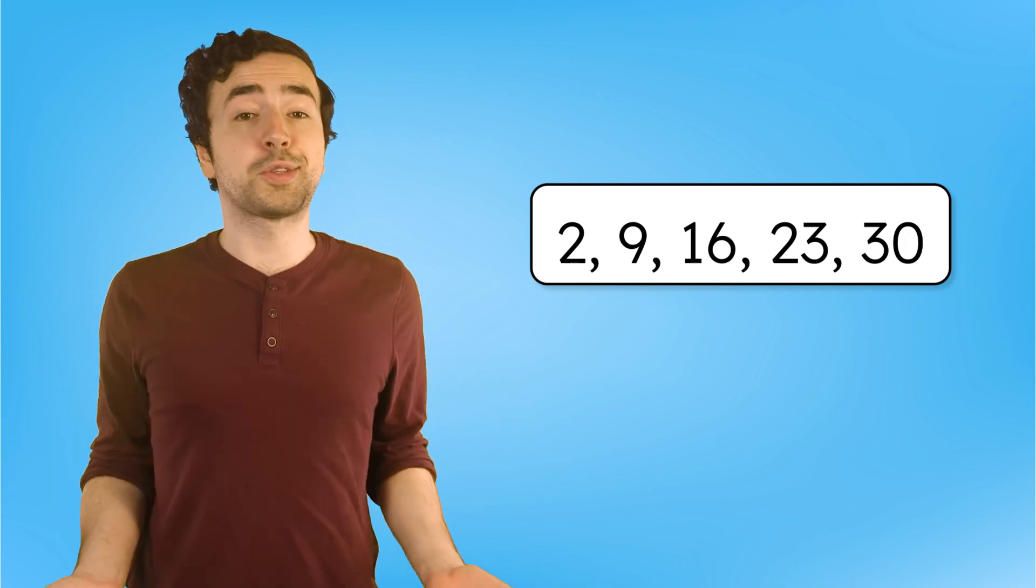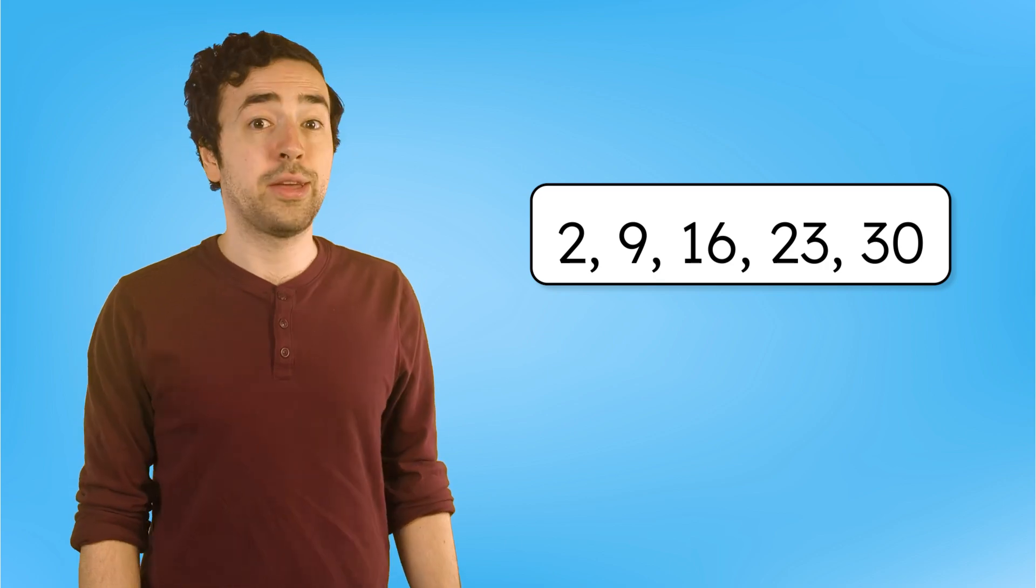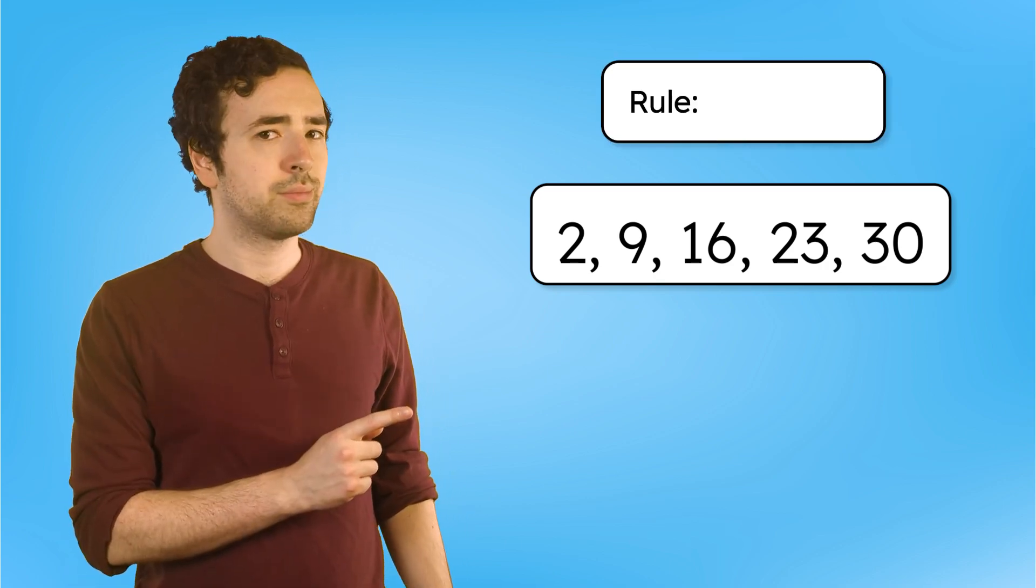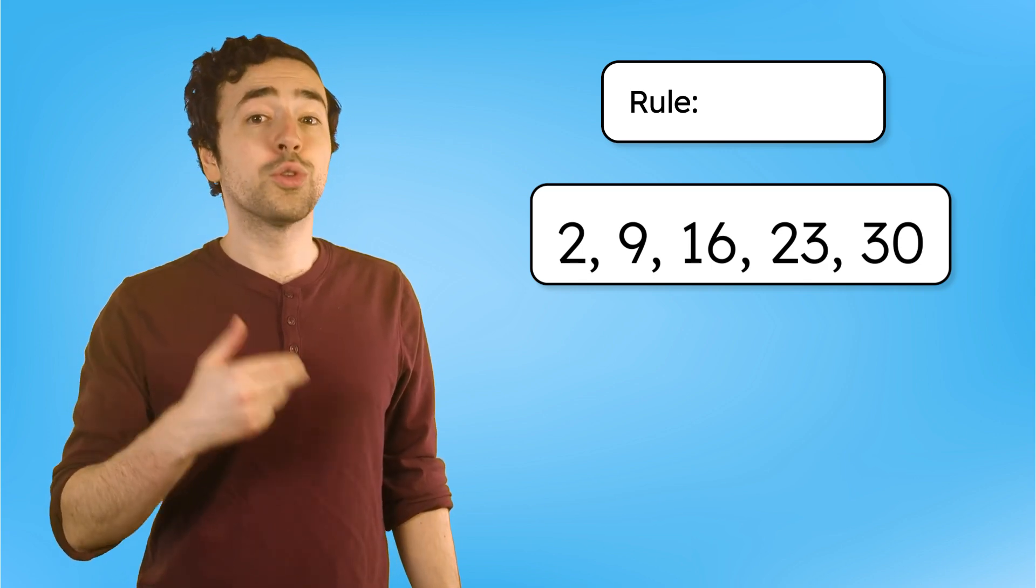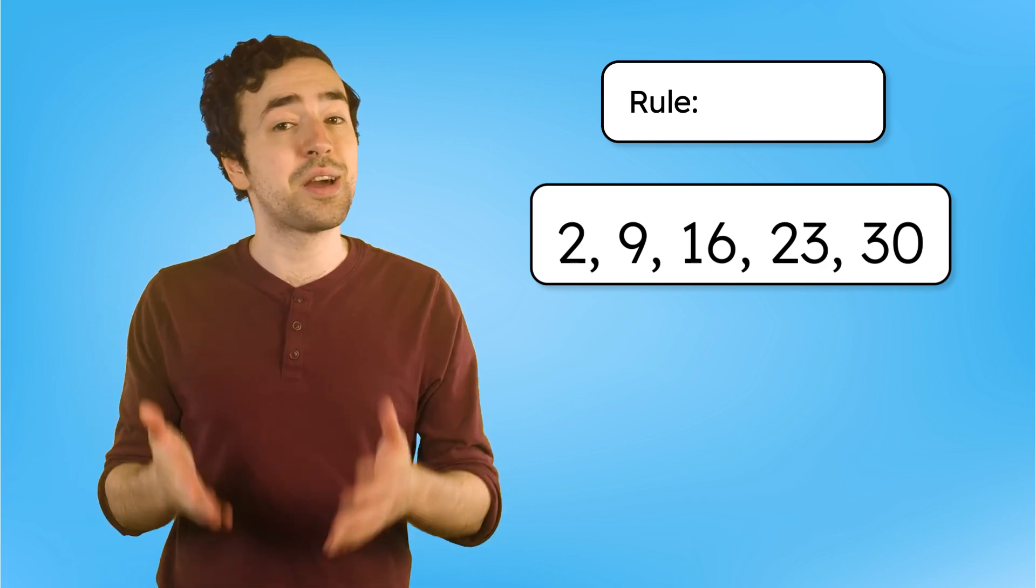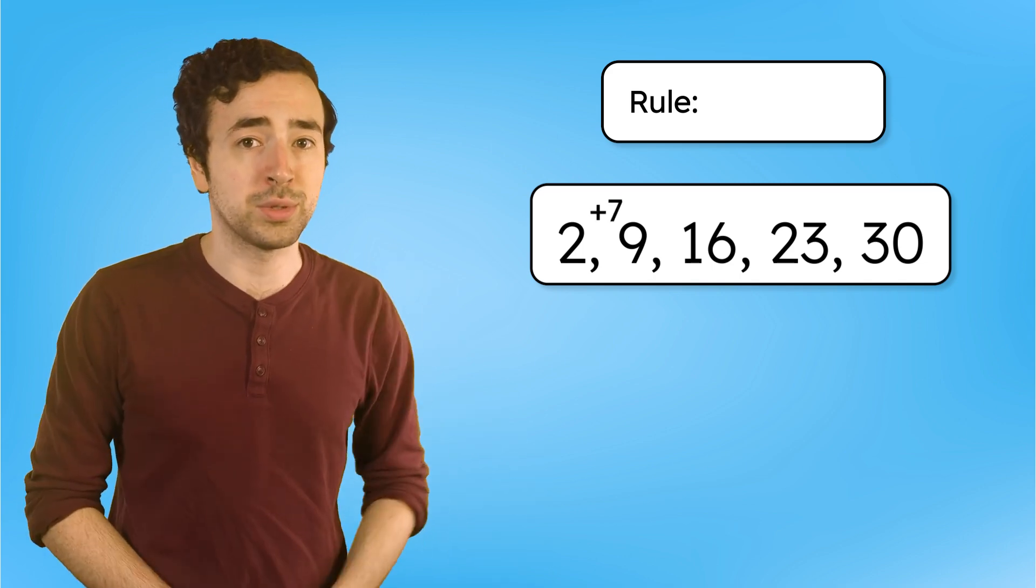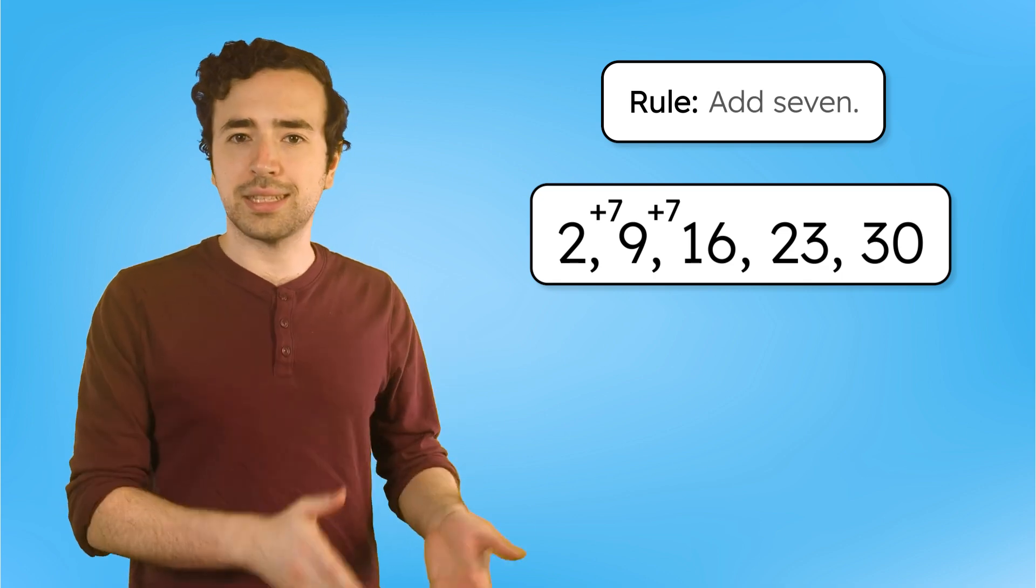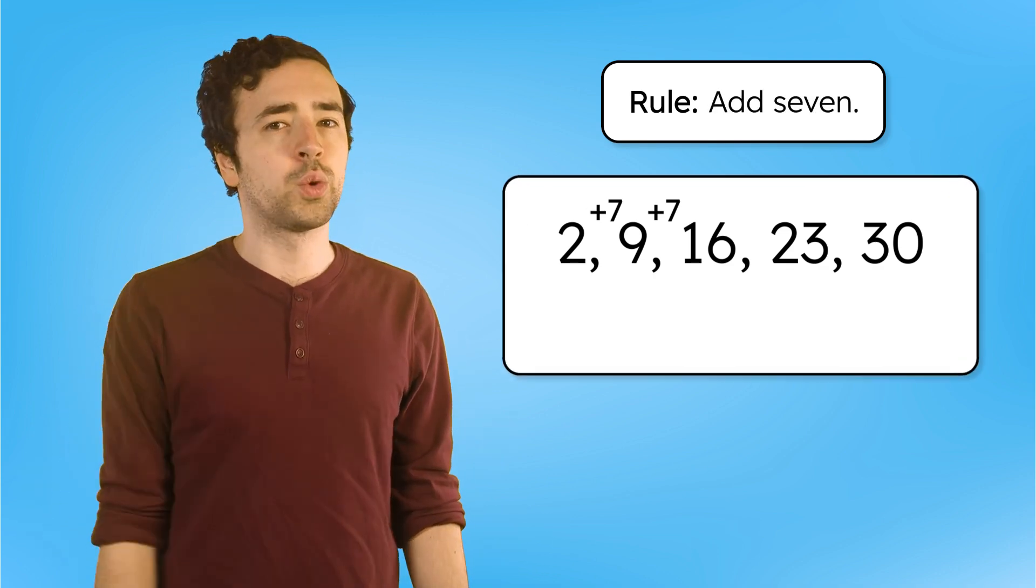Of course, we can also make growing patterns using numbers: 2, 9, 16, 23, 30. What do you notice about how the numbers are changing? What could the rule be? Sometimes the rule can be described by using numbers and operations. For this example, two plus seven equals nine, and nine plus seven equals 16. Each time we're adding seven, so the rule is add seven. Using this rule, what do you think the tenth term in the pattern will be? Pause here to record your thinking in your guided notes.